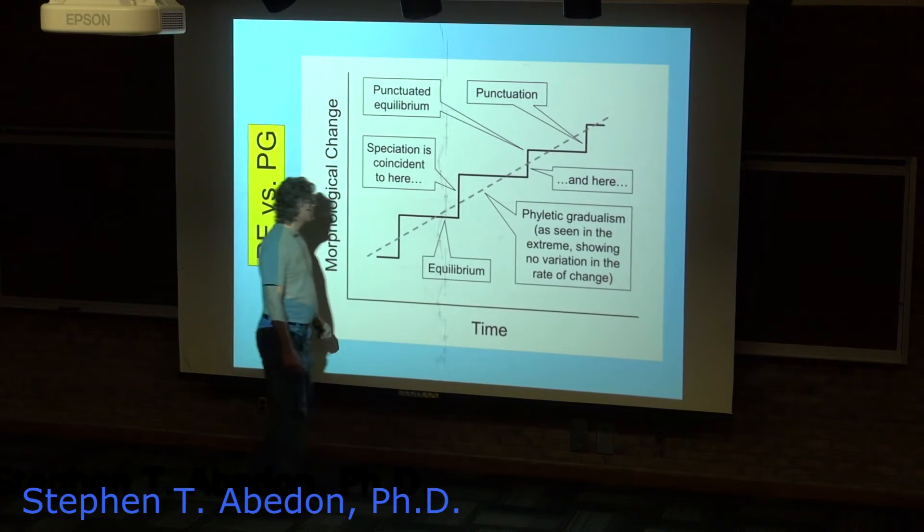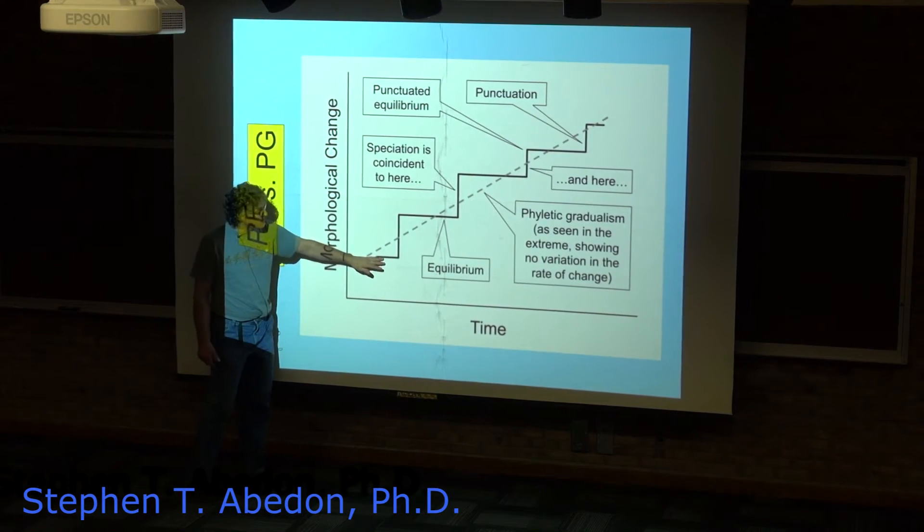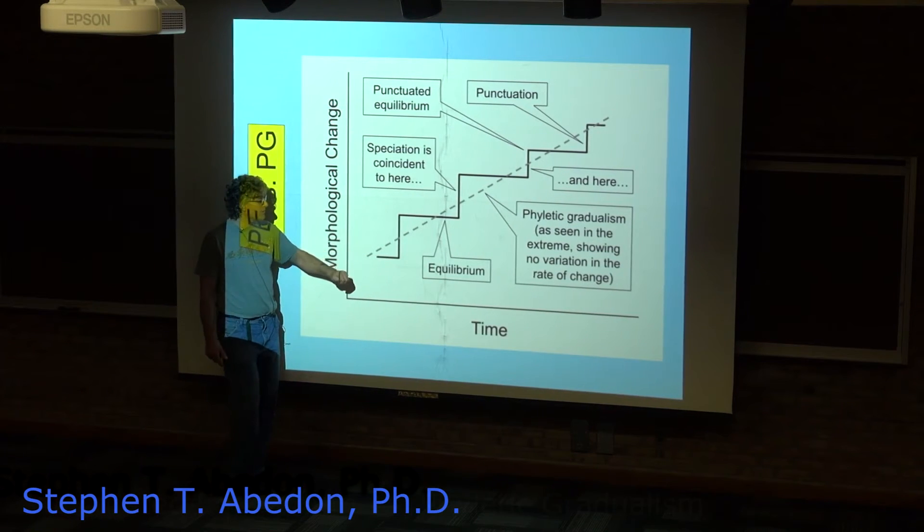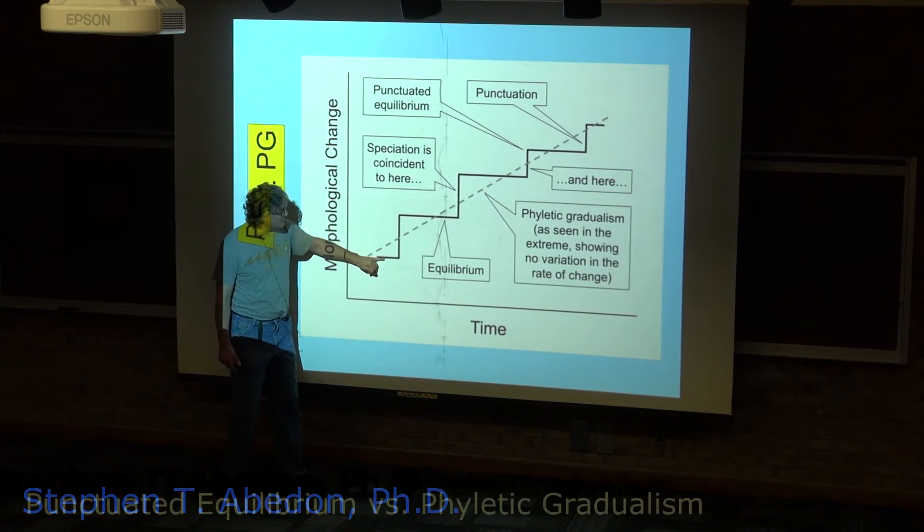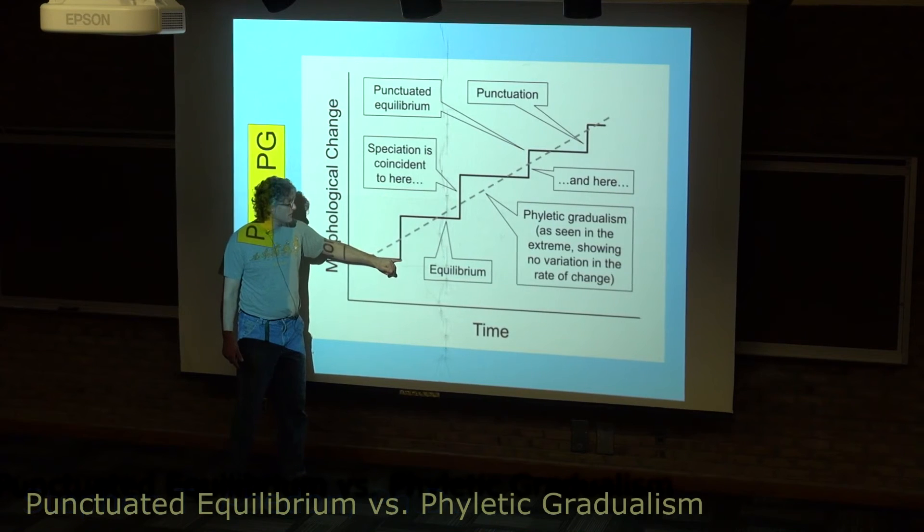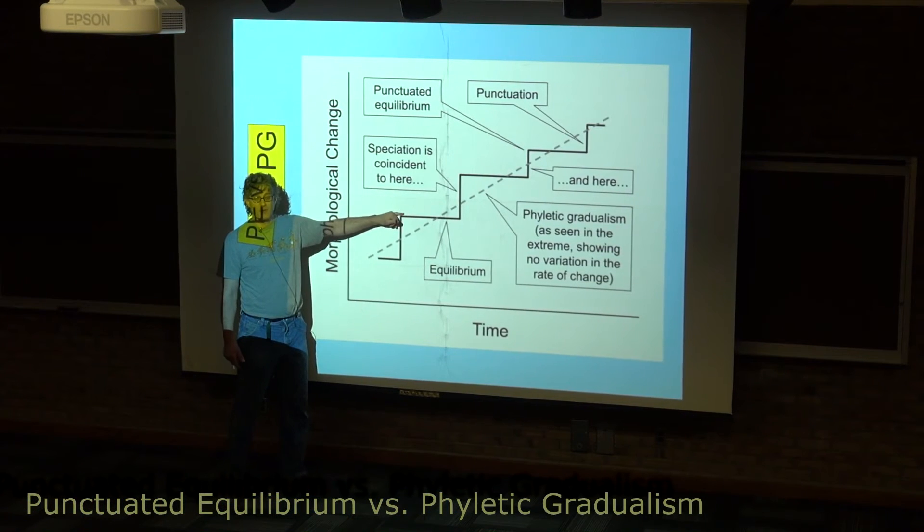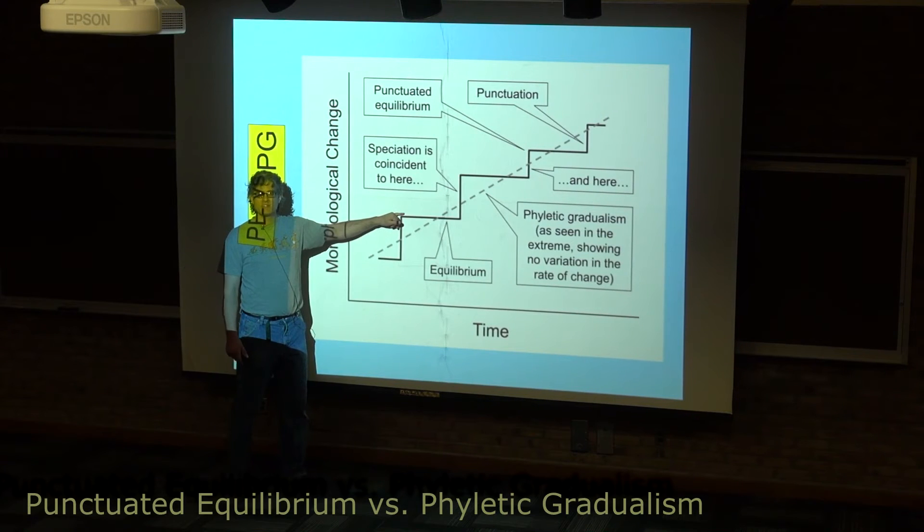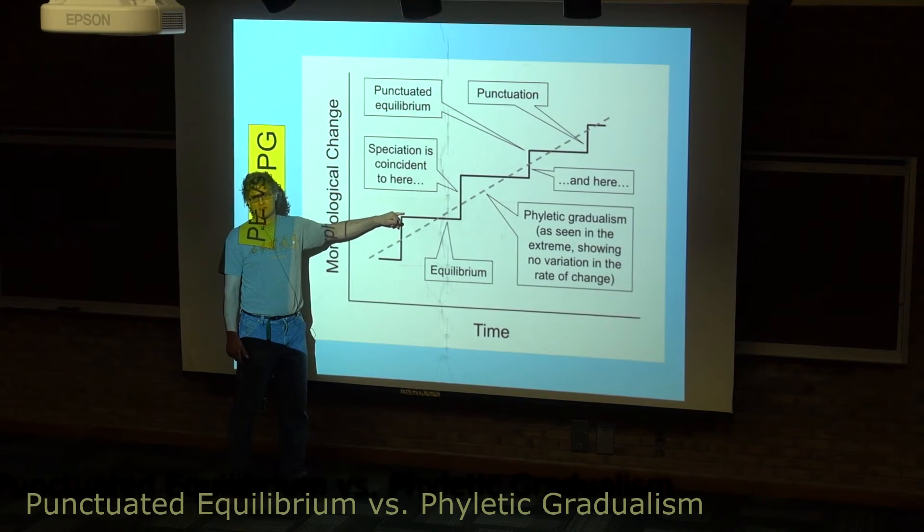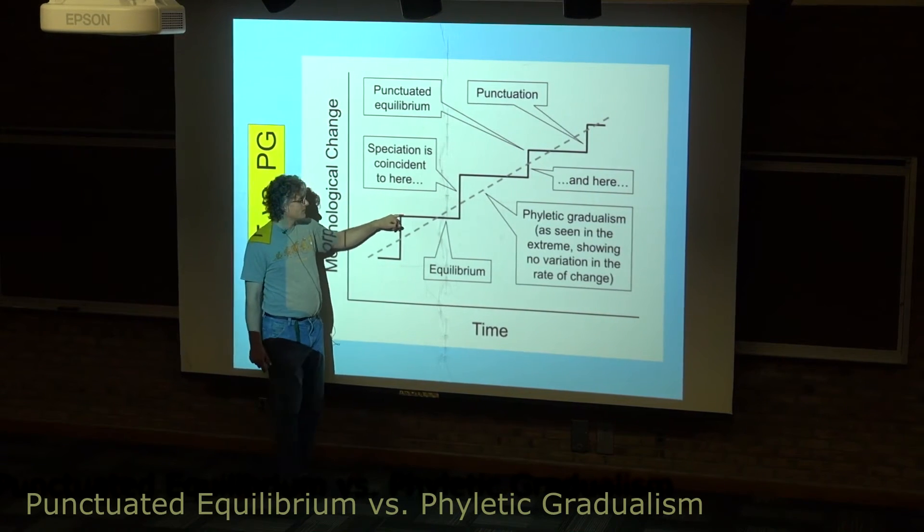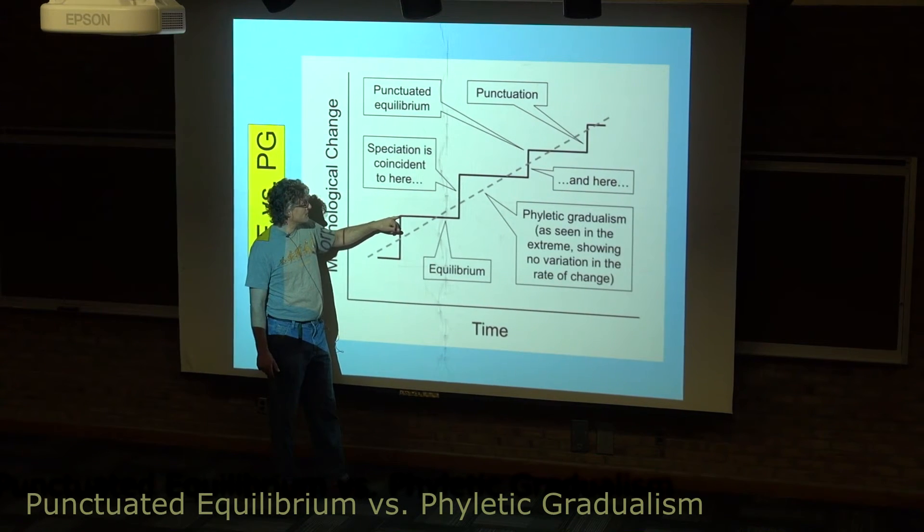That differs from the idea of punctuated equilibrium, where we have equilibrium with little change occurring, and then this punctuation event where you have rapid change. Again, rapid meaning tens of thousands or hundreds of thousands of years, but rapid as far as the fossil record is concerned.